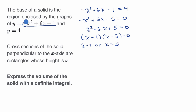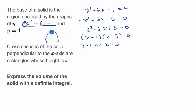Since we have a negative out front of the second-degree term, we know it's going to be a downward-opening parabola, and we know that it intersects y equals four when x equals one and x equals five. So the vertex must be right in between them — the vertex is going to be at x equals three.